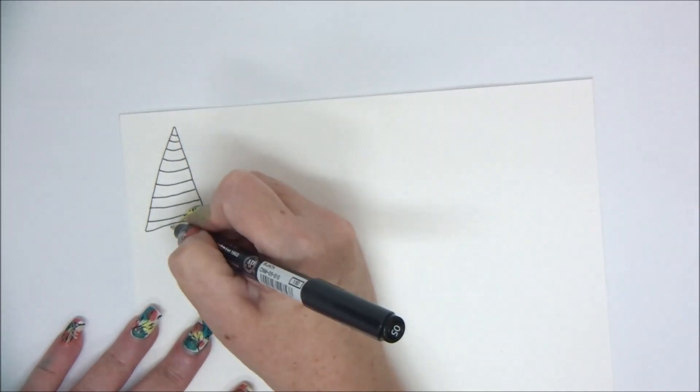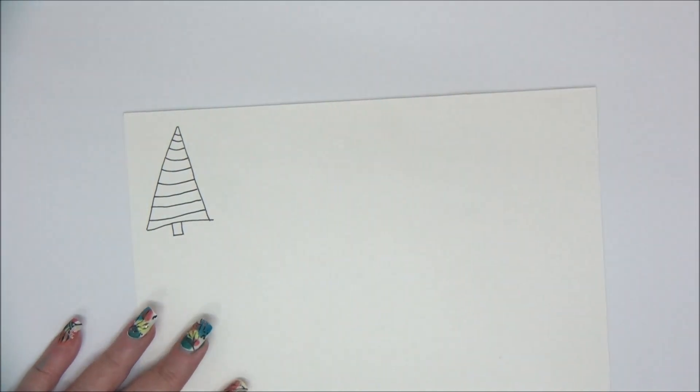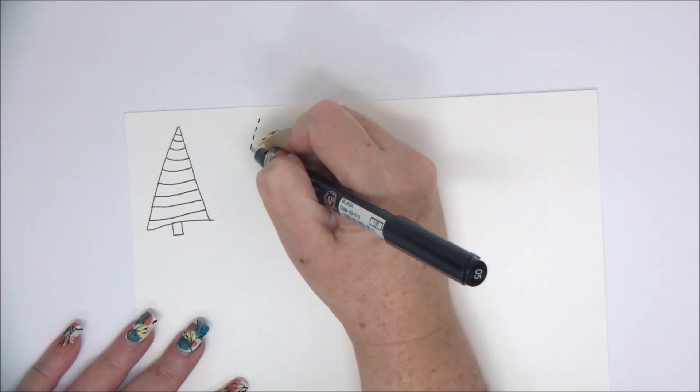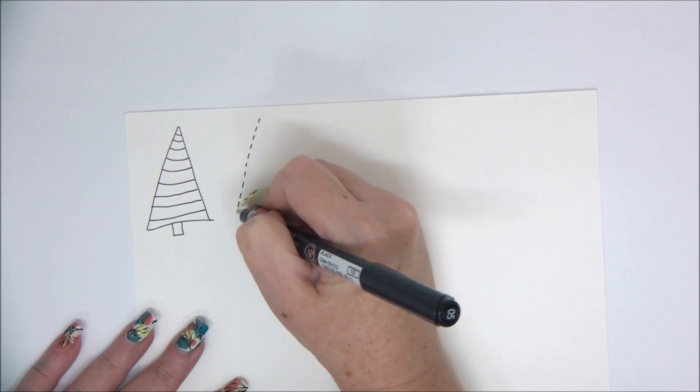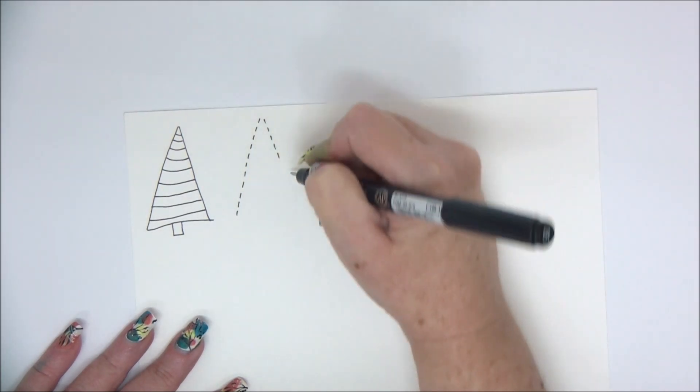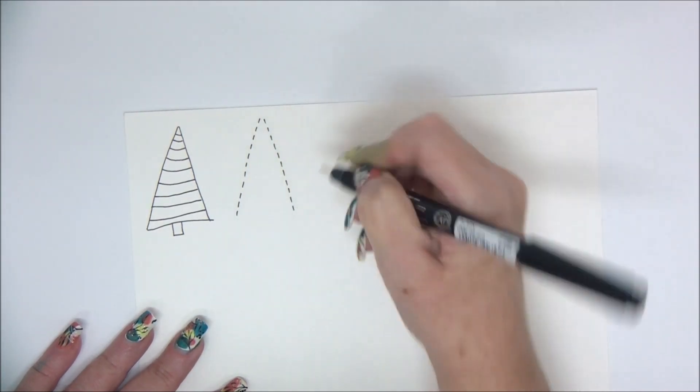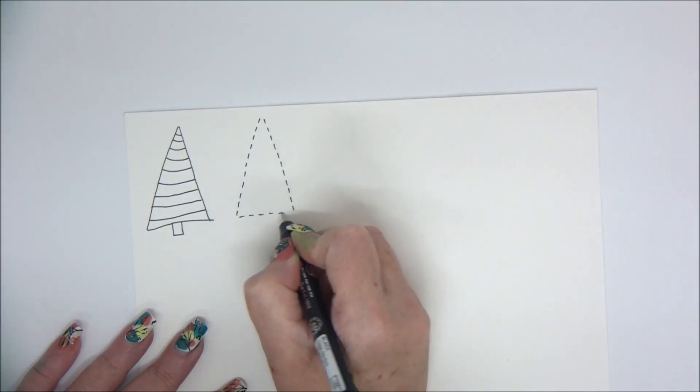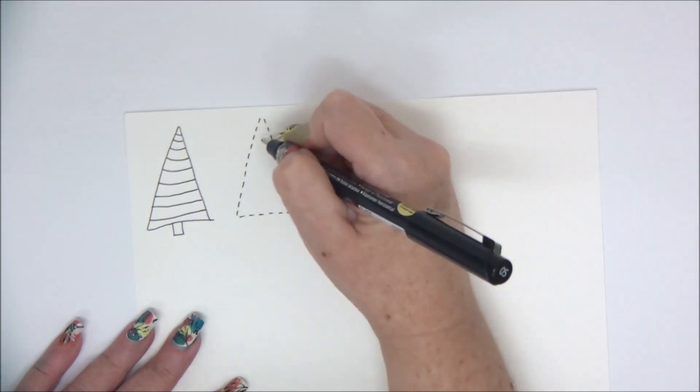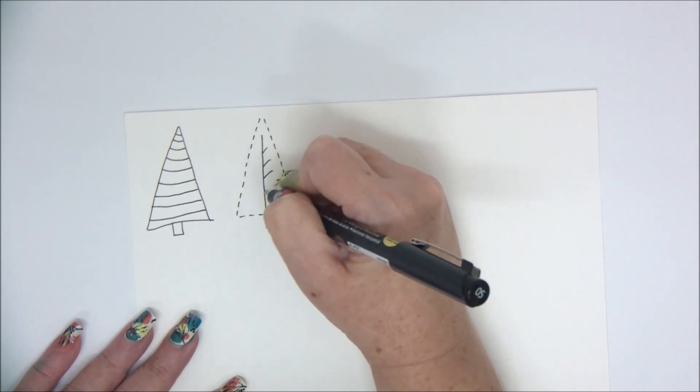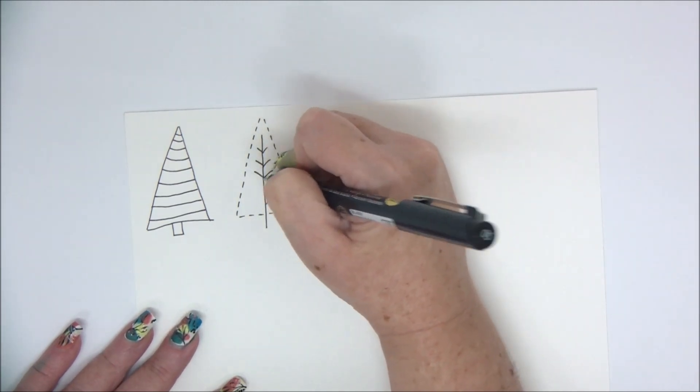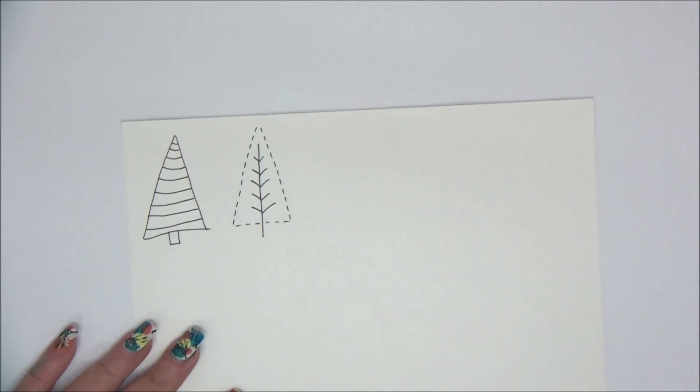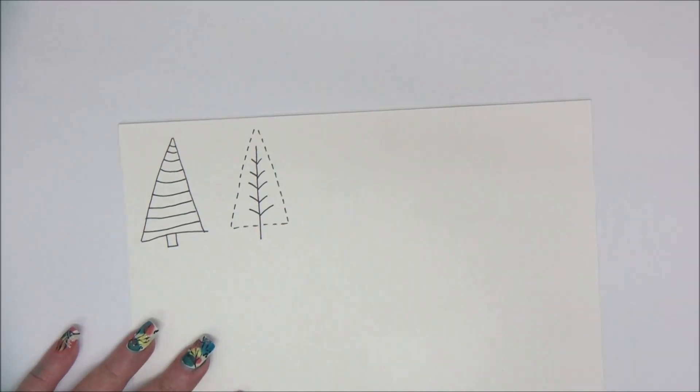Next, I'm going to make another triangle, but this time just with a dotted line instead of a regular line. Just make it look like a leaf with some branches, and that line would also be the tree trunk.